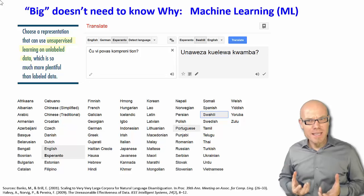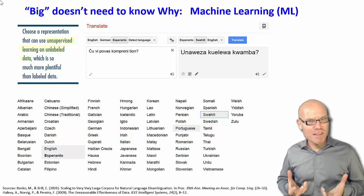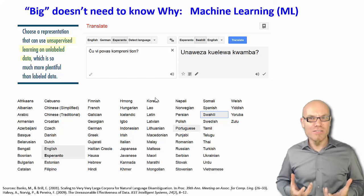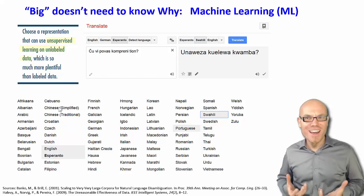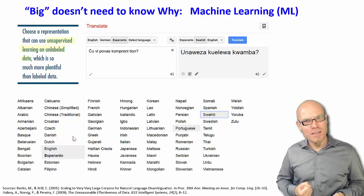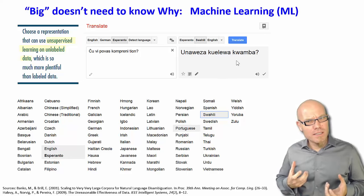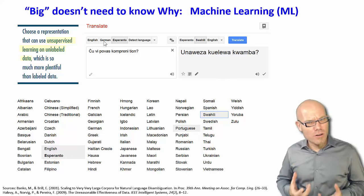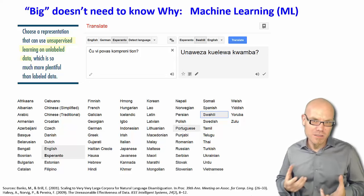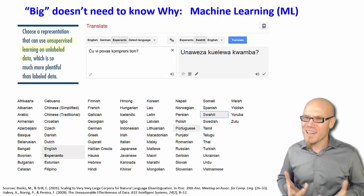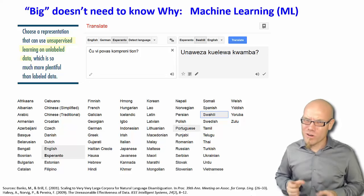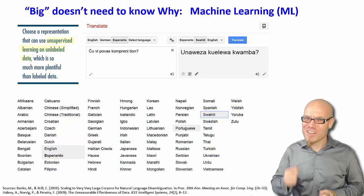With the result that by now in Google Translate you can translate more than a hundred languages one to another. For example, here I translated Swahili to Esperanto. There's probably nobody in the world who speaks both Swahili and Esperanto, because there are very few people on the planet who speak Esperanto, and for sure there's nobody at Google who speaks both Swahili and Esperanto.